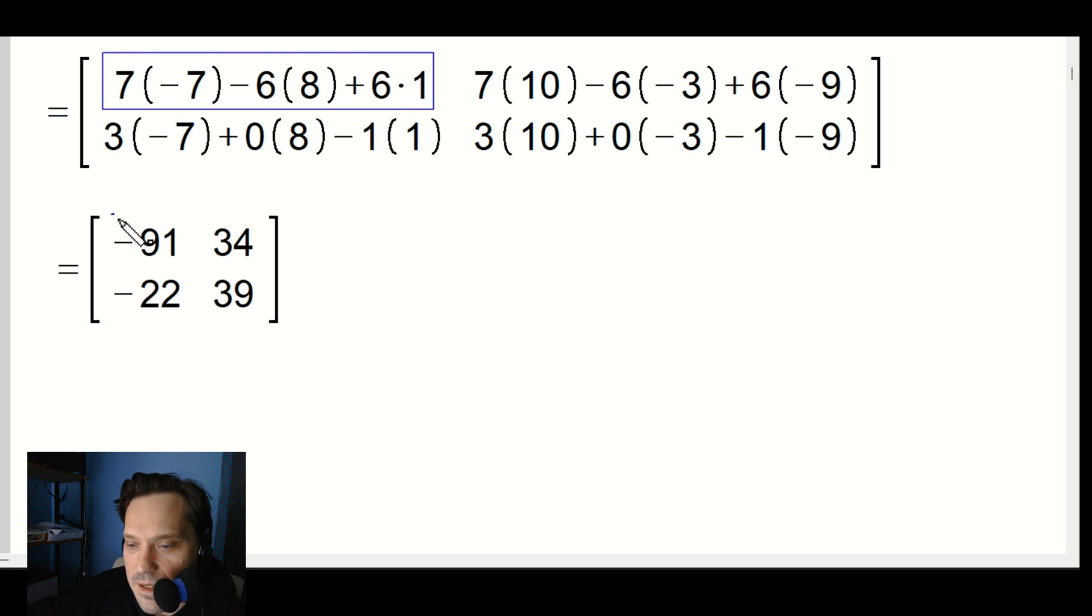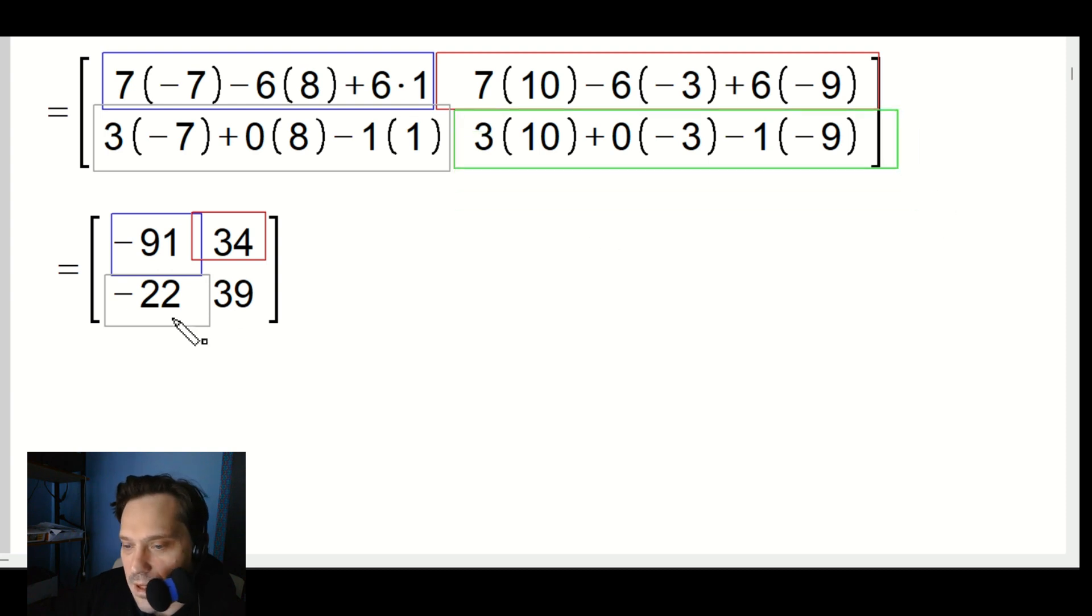Now I simplify each of these calculations. You simplify this down to -91 on the calculator, then simplify this to positive 34, this here down to -22, and this last one in green down to positive 39. So the result is a 2×2 matrix.